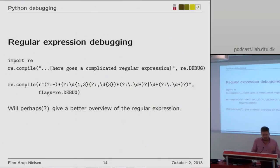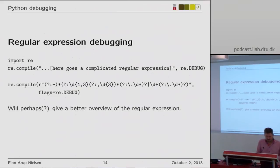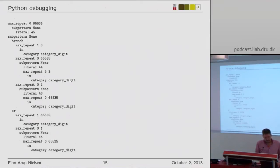Somewhat more specialized debugging is done in the regular expression module. Regular expressions can be hard to interpret. I've attempted to construct a regular expression for numbers that might contain negation, dots, mantissa and so on. It can be difficult to debug. There's a flag in the re module which might give you a better overview — it reports the expression and you can try to read it in a slightly different way, though it's not necessarily very intuitive.